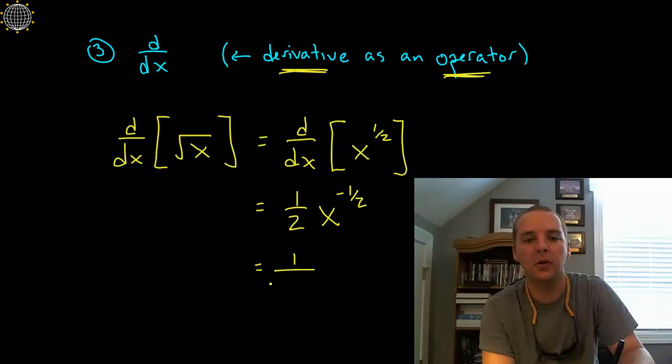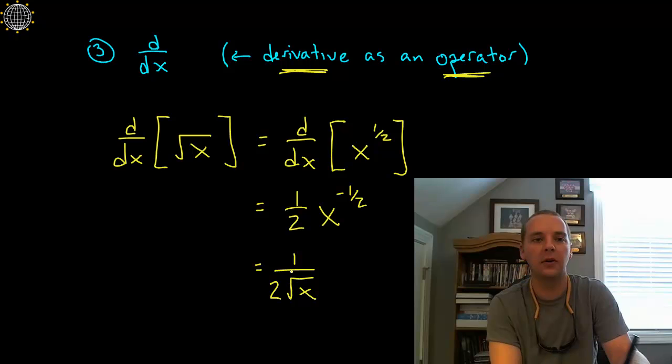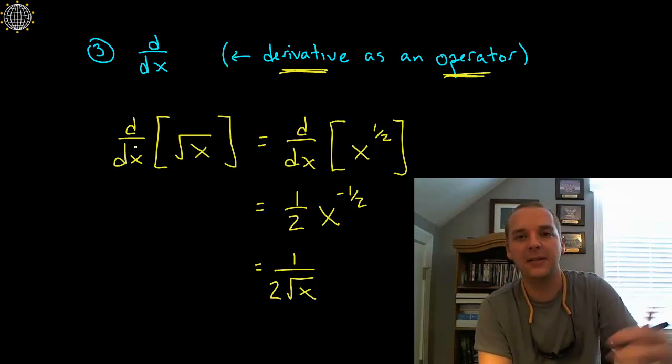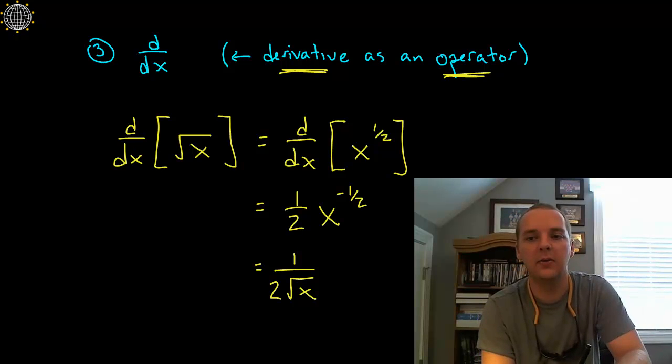You'll probably clean this up, one over two square root of x, simplify it, and this will be your final operation. But we see how this is helpful for like defining derivative rules and whatnot, because it's the derivative of things that I have not quite taken the derivative of yet.